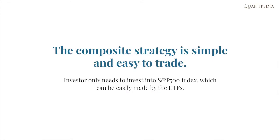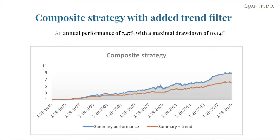An investor can form one bigger strategy out of the four selected calendar anomalies. Selected strategies are simple and easy to trade — investors only need to invest in the S&P 500 index, which can be easily done via ETFs. A very simple approach is investing the whole portfolio into the SPY during anomaly days. We also recommend adding a trend factor into the strategy; one of the simplest ways is to trade only if the price of the SPY is higher than its 200-day average. The composite strategy with the added trend factor has an annual performance of 7.47% with a maximum drawdown of only 10%.